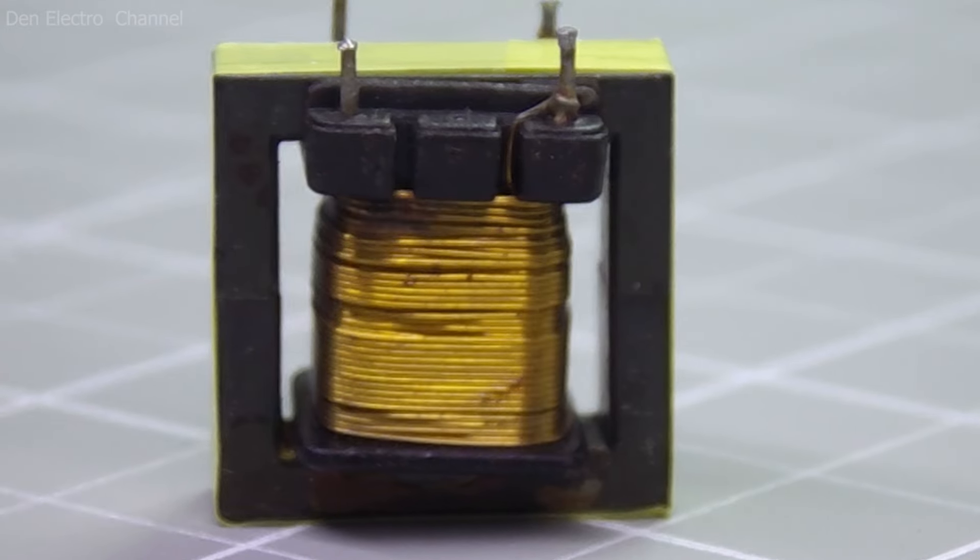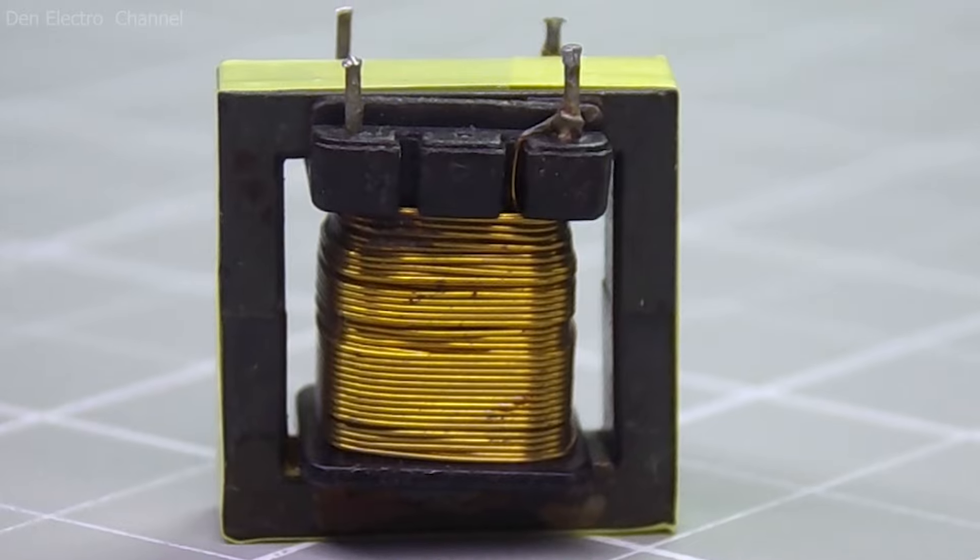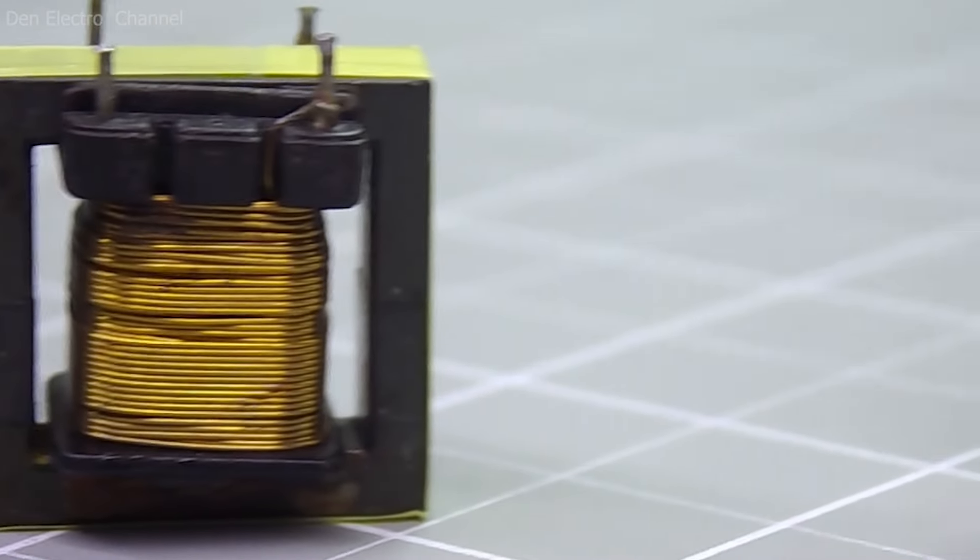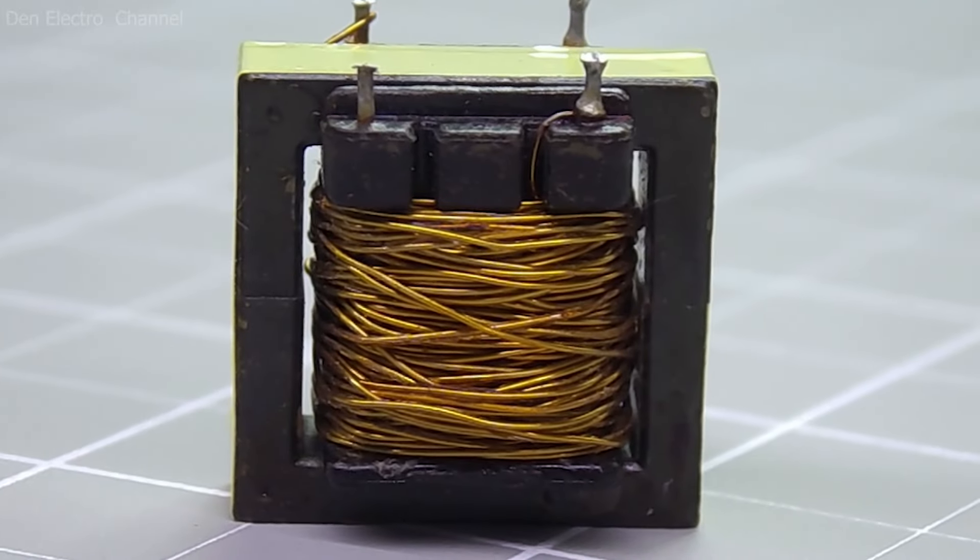When winding them, you need to be very careful and follow many rules. One of them is to wind the wire turn by turn. It is impossible to lay the wire chaotically, overlapping and creating a web.